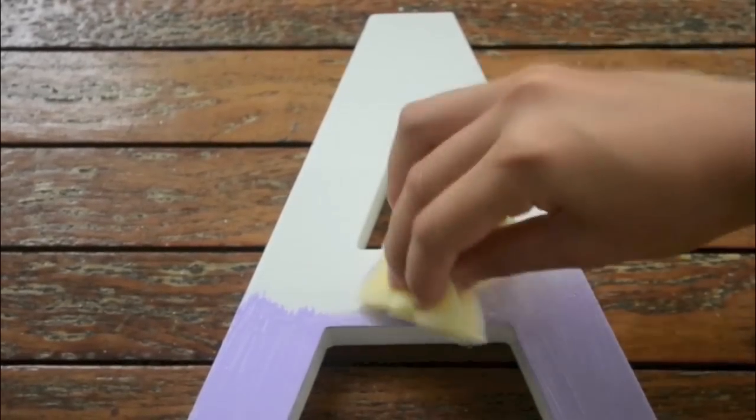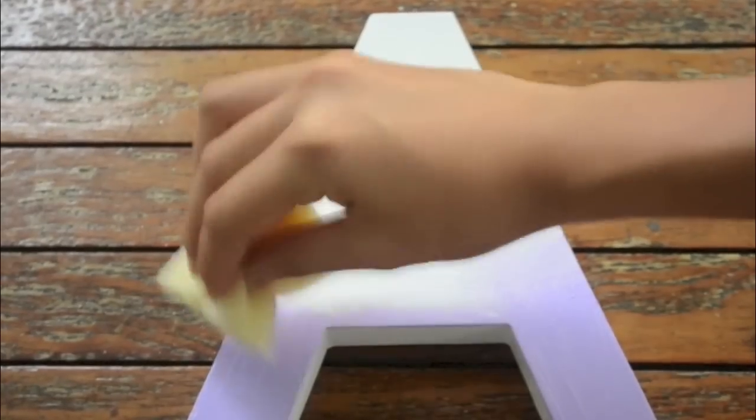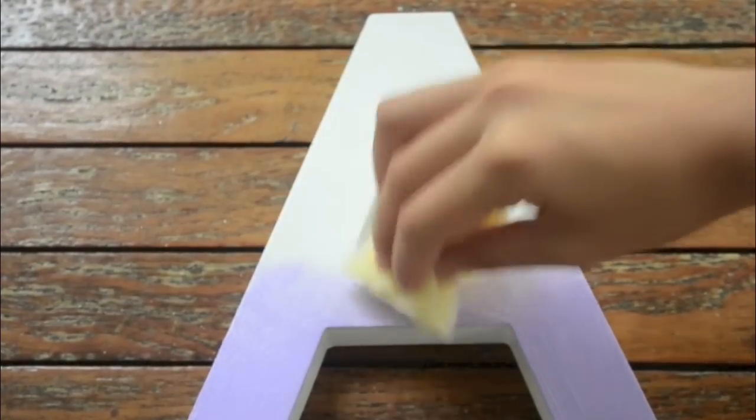And then here you just want to dab it until it looks kind of like ombre and it blends into the white.